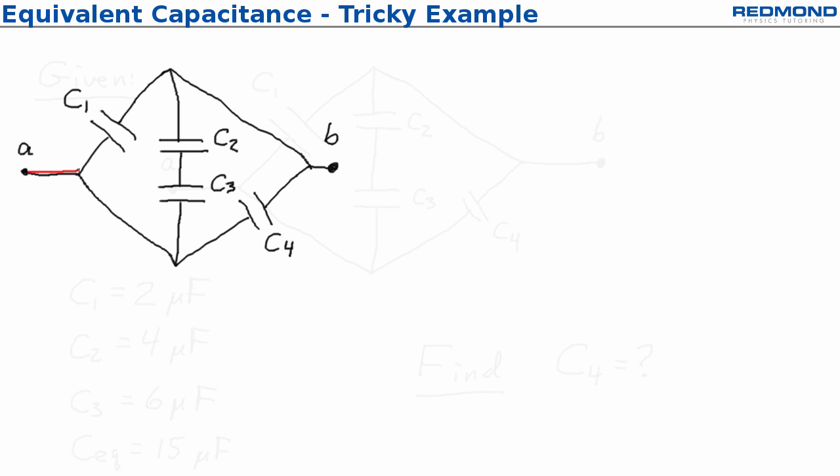Whenever I'm solving a problem where I need to really be careful about series and parallel circuit elements I always use colors and it seems a little bit childish but it's foolproof. The basic idea is that you want to color each wire in a single color. So I want to make sure that it reaches all the points or all the elements that that wire touches but it doesn't cross any circuit elements.